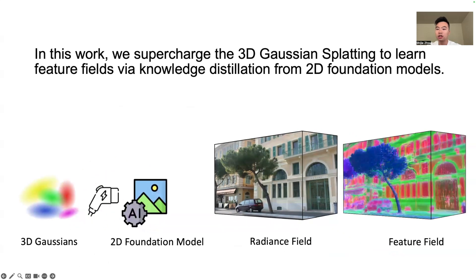Recently, large foundation models have shown promising results on many computer vision tasks, such as image recognition and segmentation. However, they are in 2D, not 3D. In this work, we supercharge the 3D Gaussian Splatting to learn feature fields via knowledge distillation from 2D foundation models.